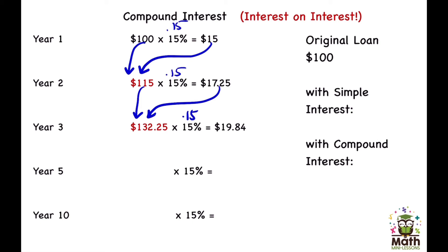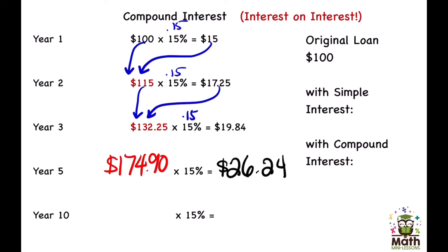Pretend five years go by and he hasn't paid you anything yet. The loan has grown to $174.90. We find 15% of that amount — and it's more than $19; it's now $26.24 in interest. See how it started at $15 and is now growing bigger because more time is going by. Fast forward again to see the power of time.